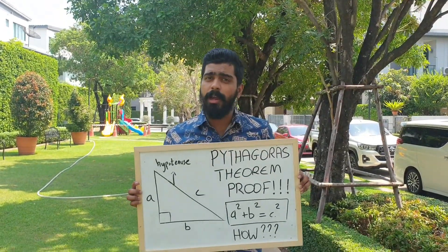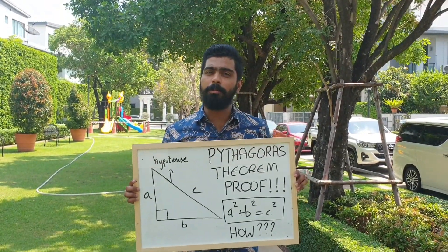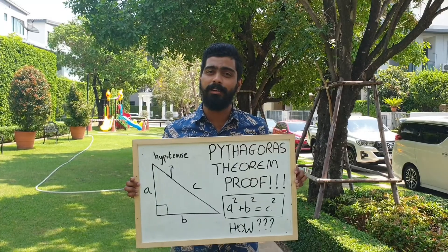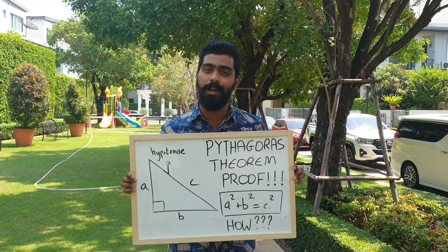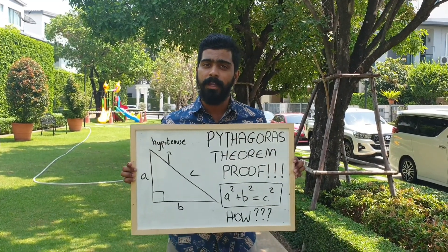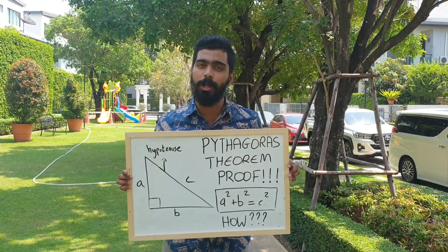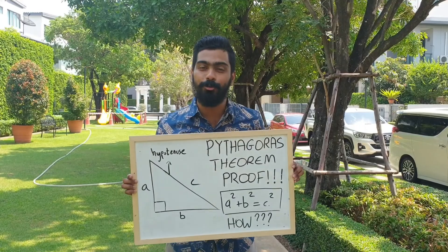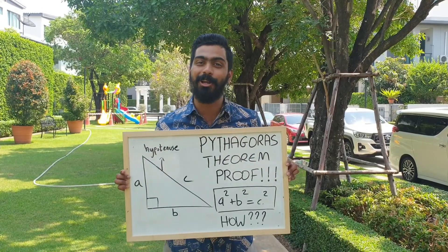Have you ever wondered why a squared plus b squared is equal to c squared in the Pythagorean theorem? In this video you will understand its proof.